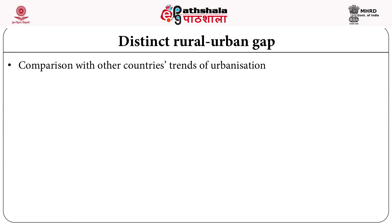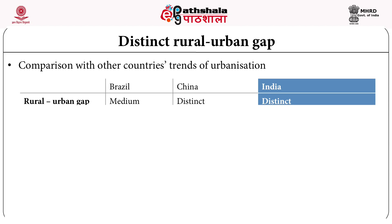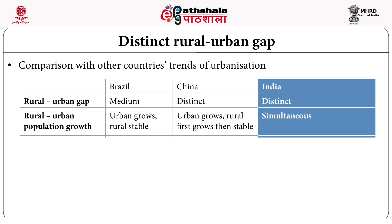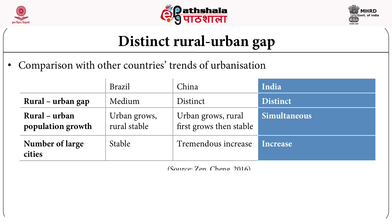When we compare India's urbanization trends with those of other countries, namely Brazil and China, we see that there is a distinct rural-urban gap in India, and urban and rural growth have been simultaneous. Whereas in Brazil, urban growth is occurring but the rural population is stable. Regarding the number of large cities, it is stable in Brazil, there has been a tremendous increase in China, and in India there is also an increase in the number of large cities.